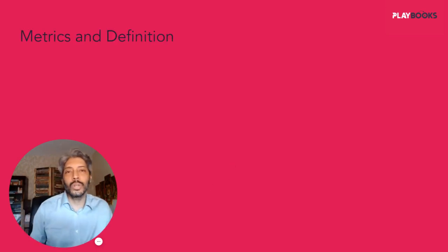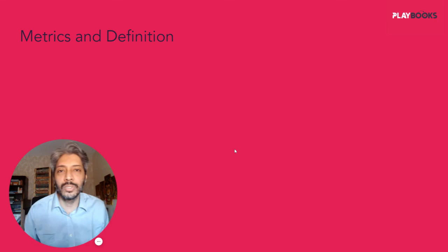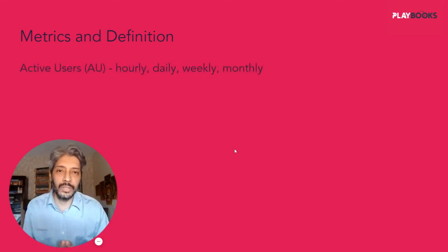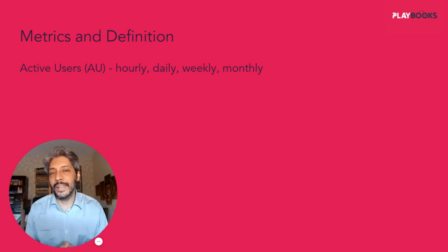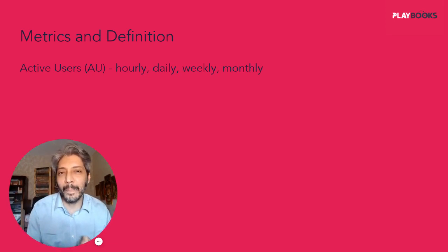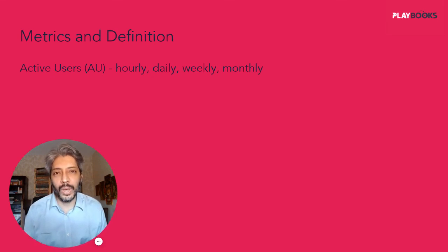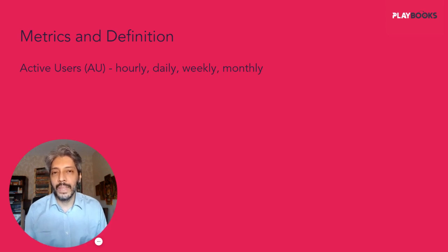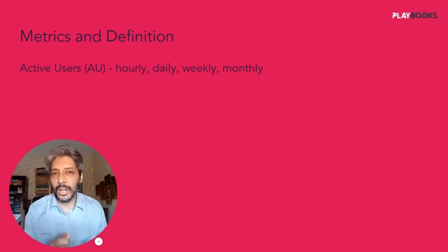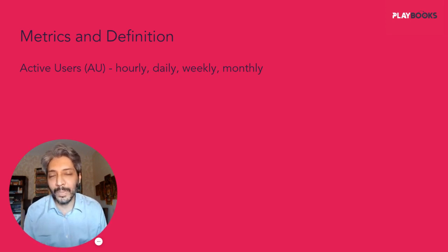Let's go one by one on each of the definitions. The most important first definition we want to cover is active users — your hourly active users, daily active users, weekly active users, or monthly active users. This is very dependent on the type of product that you have. An active user is someone who comes to your product and does something important, an action which you genuinely care about.